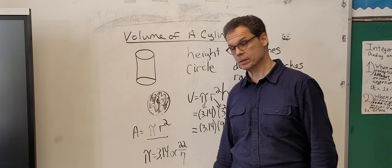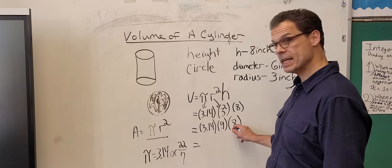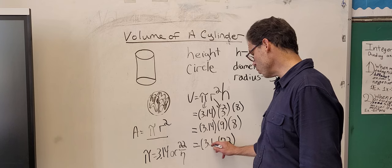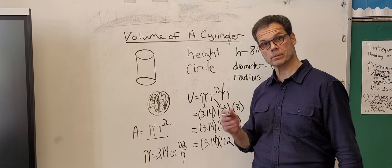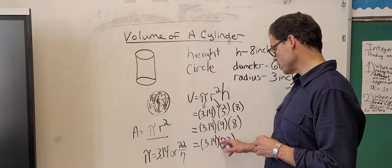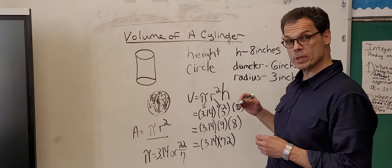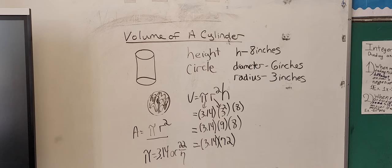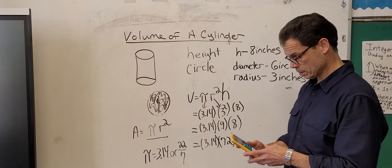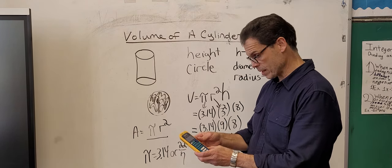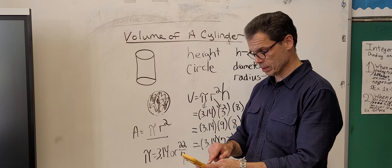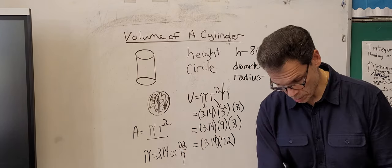Now we do our next multiplication. We work in layers. 9 times 8 is 72. Now we have 72 times 3.14. We can do this on a calculator. If I were to do this I would turn my calculator on and type 72 times 3.14 enter, and I would get 226.08.